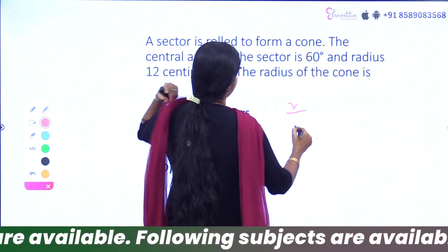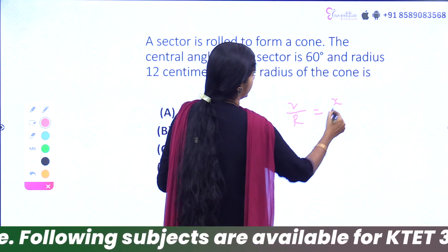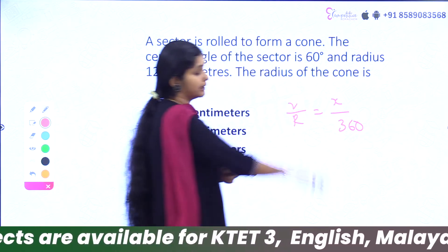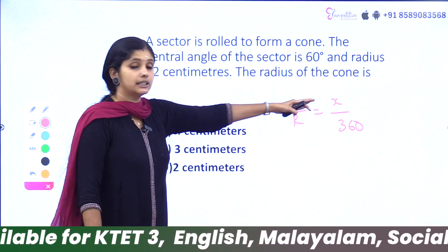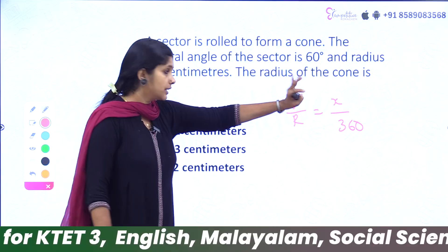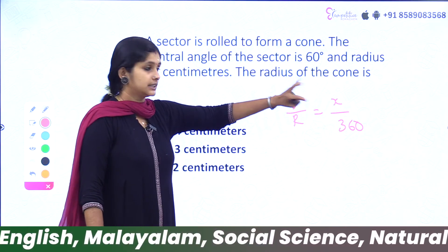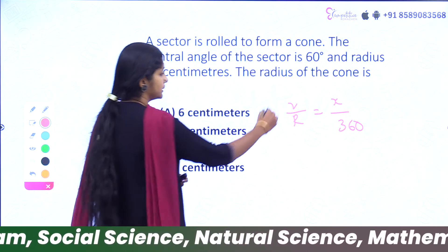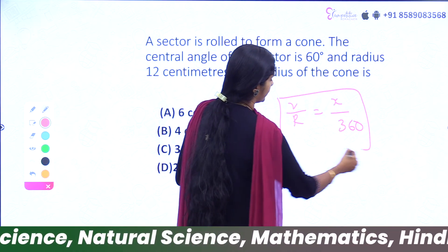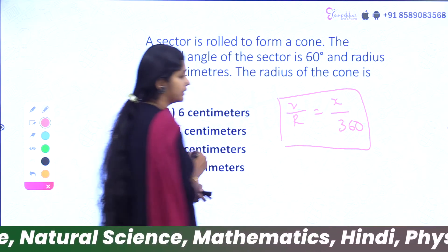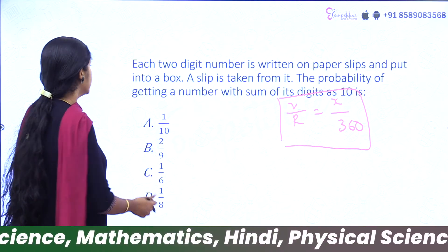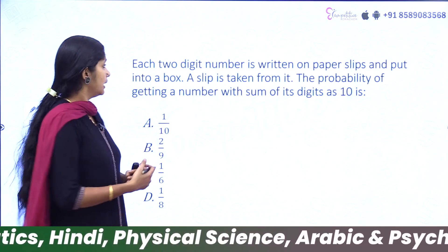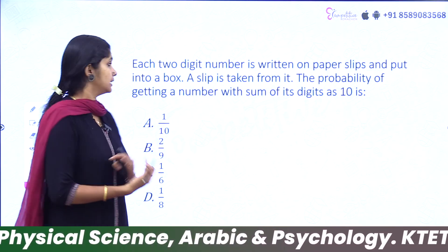The formula is r divided by capital R equals θ by 360. If we have the radius of the sector, we can solve for the cone radius. Let's practice this.